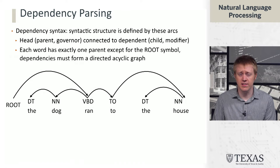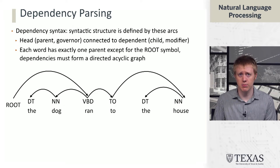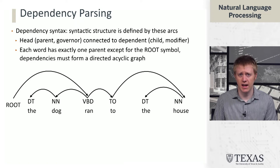This gives us the rough skeleton of dependency parsing or dependency syntax — a syntactic formalism that doesn't introduce non-terminal symbols, but instead defines the structure through relationships or arcs between words. The terminology we use: a head word, parent, or governor is connected to a dependent, child, or modifier. For example, 'house' is the head and 'the' is the dependent or child. Each word has exactly one parent except for the root symbol, which doesn't have a parent. The dependencies have to form a DAG, so we cannot have cycles.